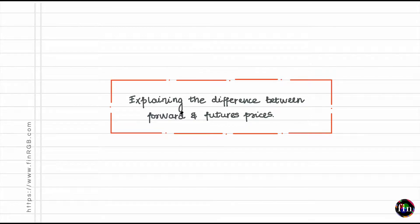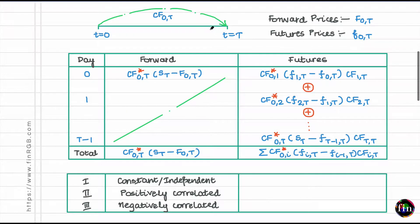In this video we will take a look at explaining the difference between forward prices and futures prices. Up until now we have been conveniently assuming that the two prices are equal or very close to one another, but in reality forward prices can deviate from futures prices. The focus of this video is to explore reasons why that might happen.